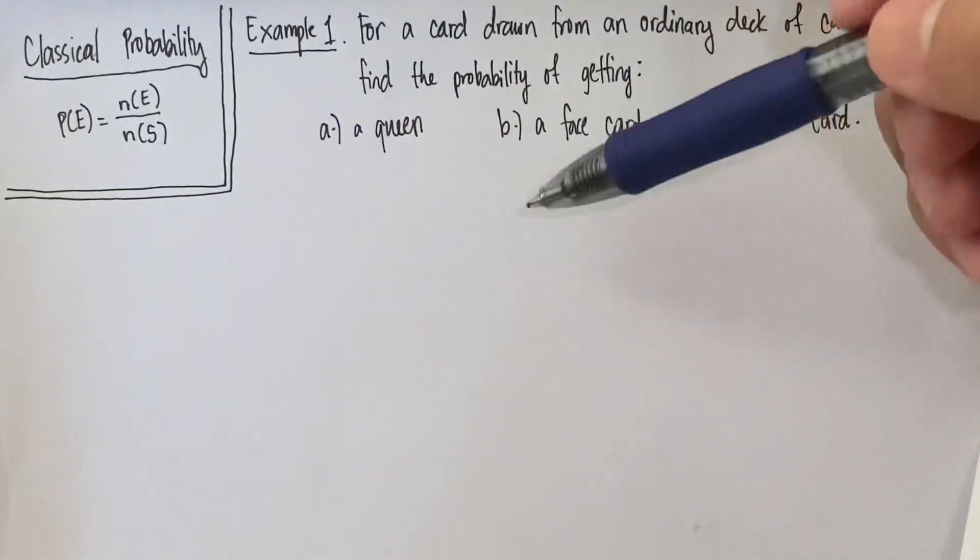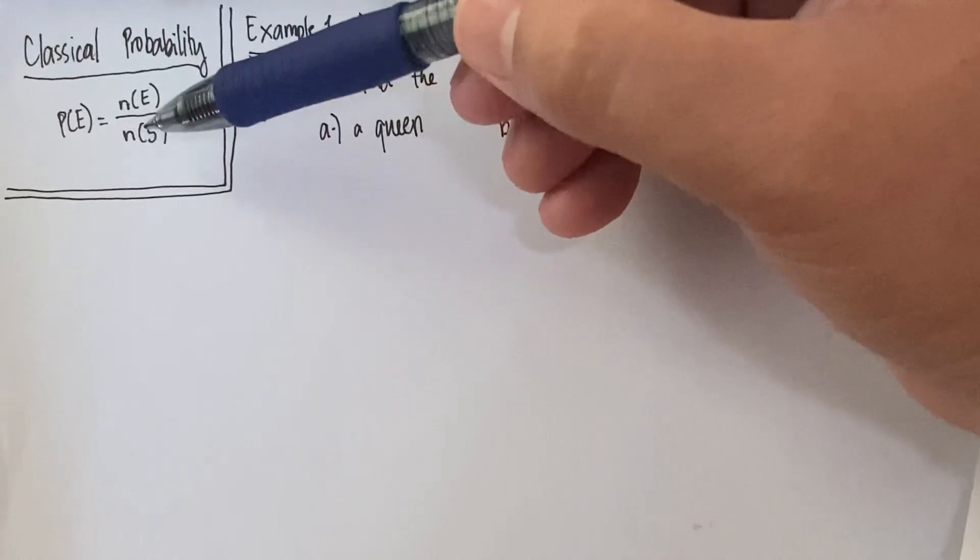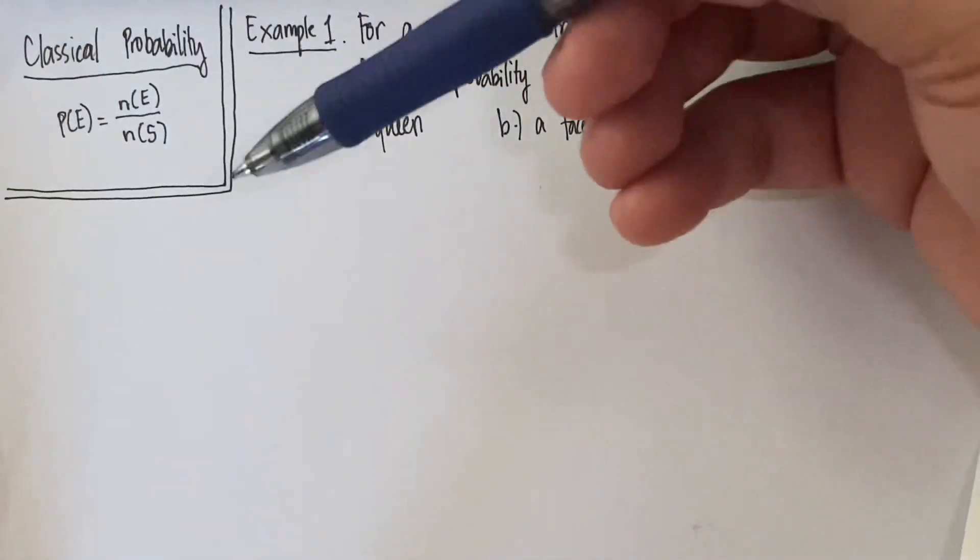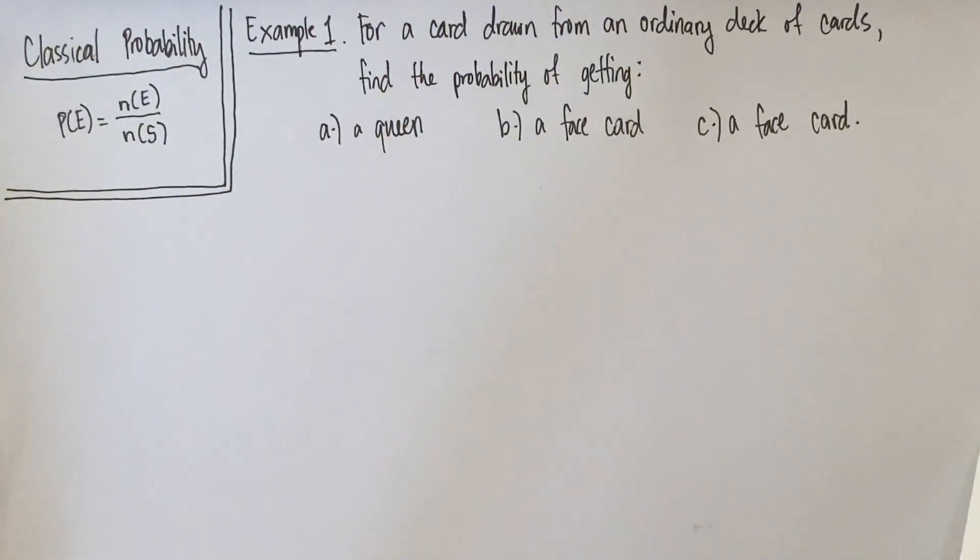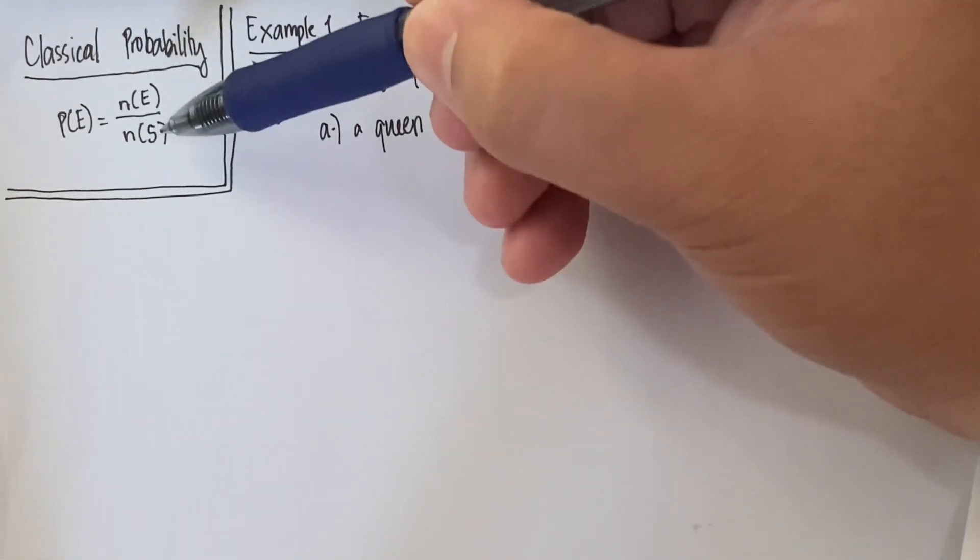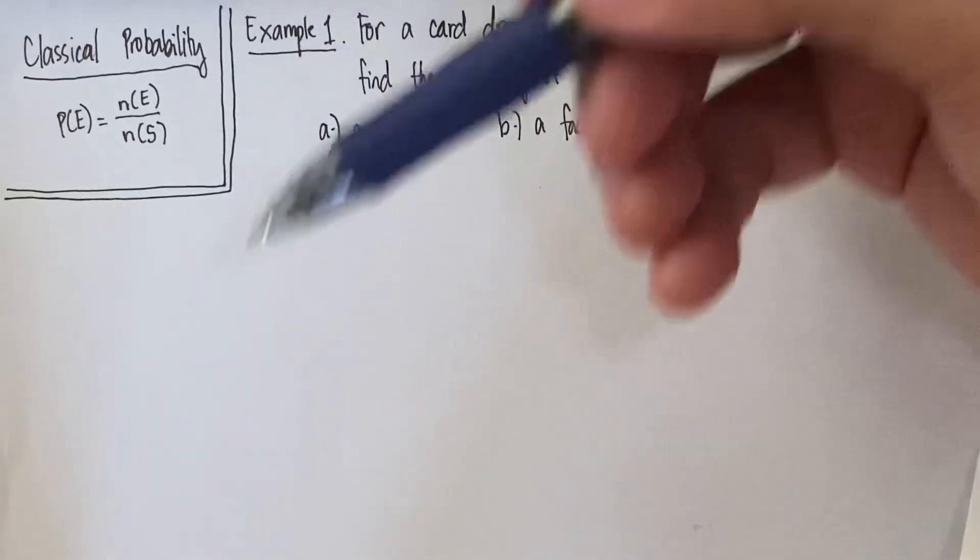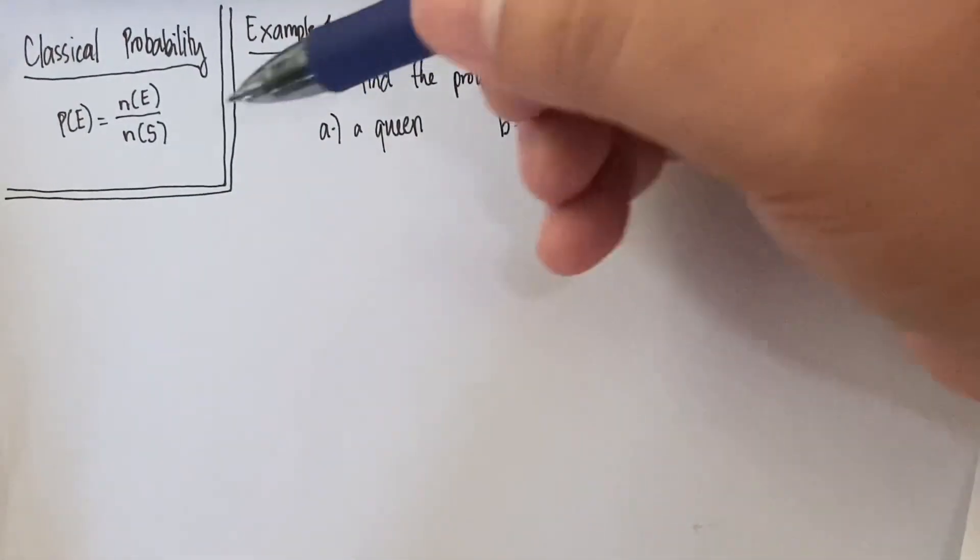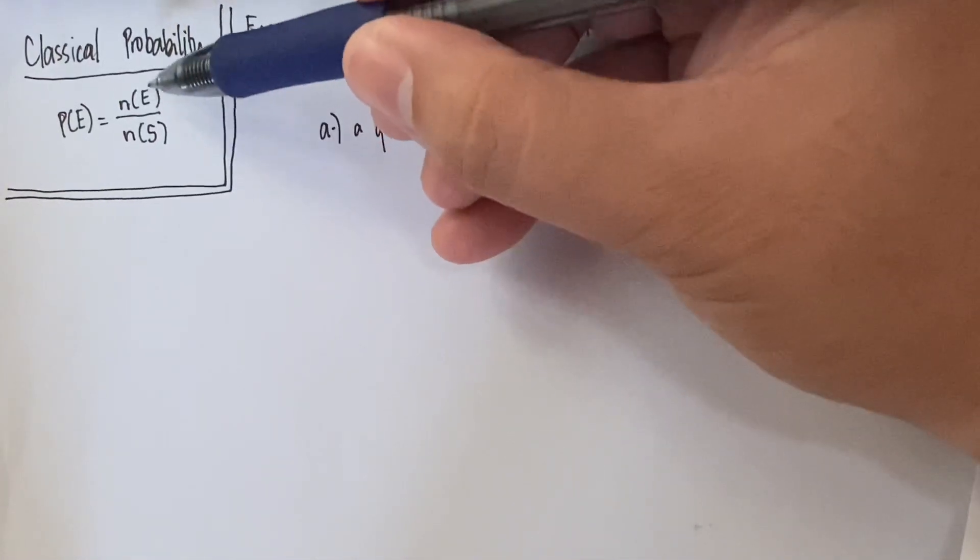When I teach this to my students, I don't really use the word cardinality. The definition of cardinality is simply the number of sample points in that certain set. So recall that the sample space is the totality of all the sample points or all the outcomes in a certain experiment, and E is the event.